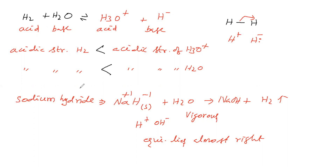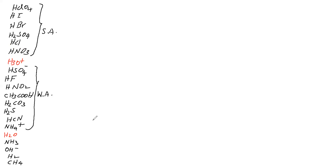So if acidic strength falls under a category even less than that of water, that acid is called a very weak acid. Ammonia, OH⁻, H2, and CH4 (hydrocarbons) are very weak acids. Strong acids have acidic strength greater than hydronium ion. Weak acids have acidic strength less than hydronium ion but greater than water. Very weak acids have acidic strength less than even water.